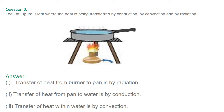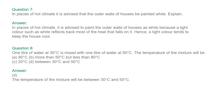Question number six: look at the figure and mark where heat is being transferred by conduction, convection, and radiation. In the answer: transfer of heat from the burner to the pan is by radiation; transfer of heat from the pan to the water is by conduction; transfer of heat within the water is by convection.